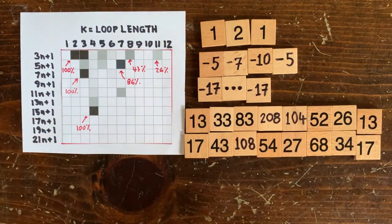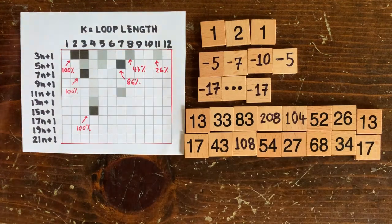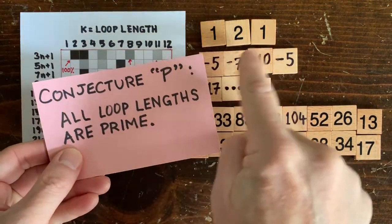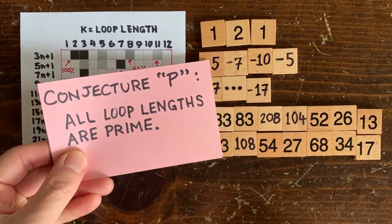Hey, maybe we should make a conjecture P that all loop lengths are prime, like 2, 3, 11, and 7.